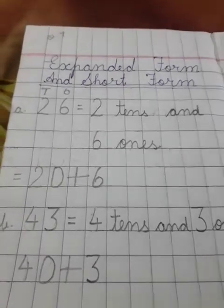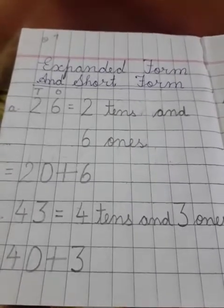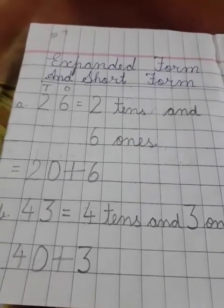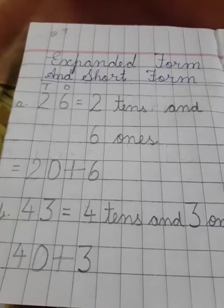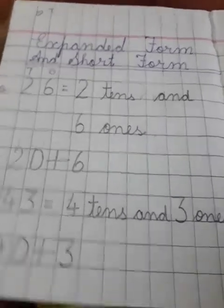First I will tell you about expanded form. Children, expanded form is a way of writing numbers to see the math value of individual digits, means to write the numbers individually. How you will write them individually?